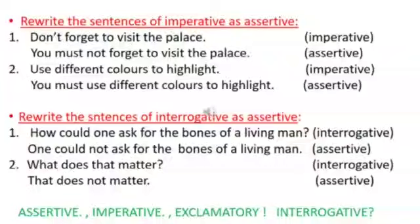Next one. Rewrite the sentences of interrogative as assertive. Interrogative means you are asking a question. Asking a question into a statement or declarative sentence or declare something. First one. How could one ask for the bones of a living man? One could not ask for the bones of a living man, assertive. What does that matter? That is an interrogative. You will say as assertive, that does not matter.